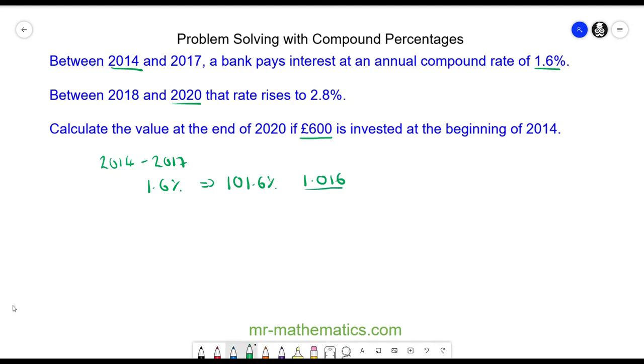Between 2018 and 2020, the interest rate was 2.8%, which is 102.8% of the investment. As a multiplier, this is 1.028.